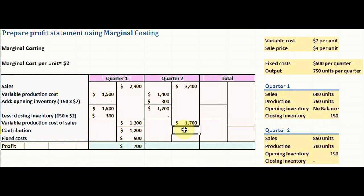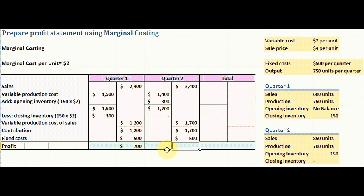Contribution is sales minus variable production cost of sales: $3,400 minus $1,700 gives a contribution of $1,700. Fixed cost is $500 per quarter. Profit is contribution minus fixed cost: $1,700 minus $500 gives a total profit of $1,200 for quarter two.